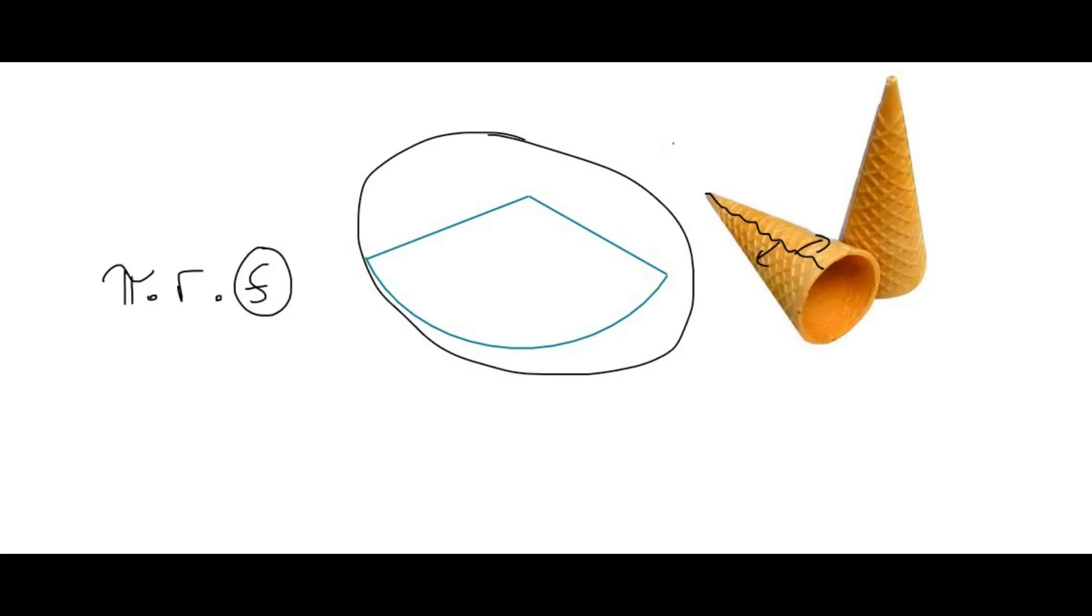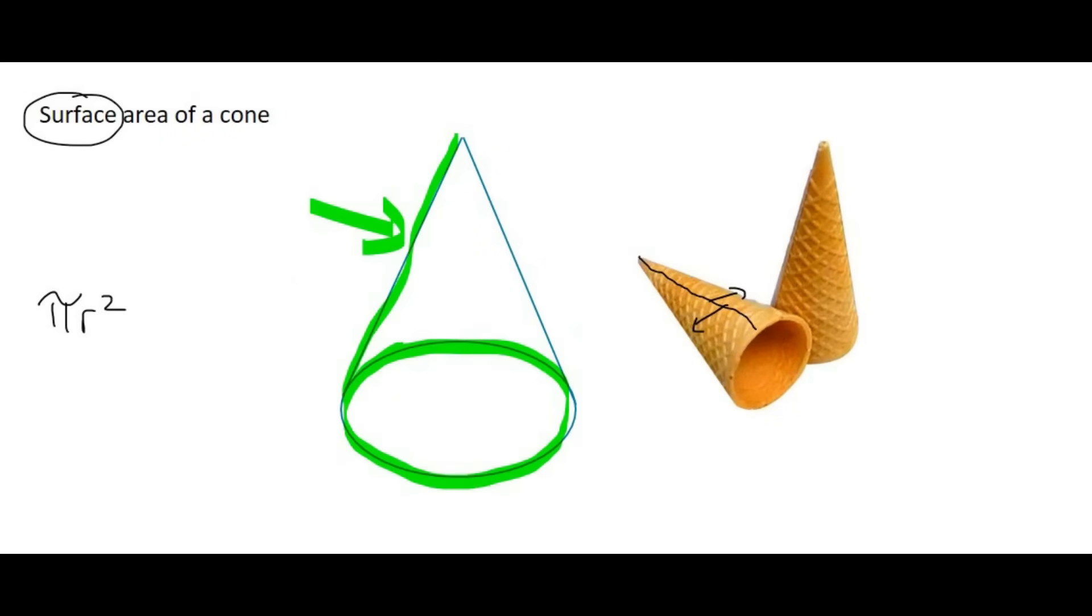Now, this s is the slanted height of the cone. So that's this part over here. That part there that I've shown with the arrow. That is the slanted height.